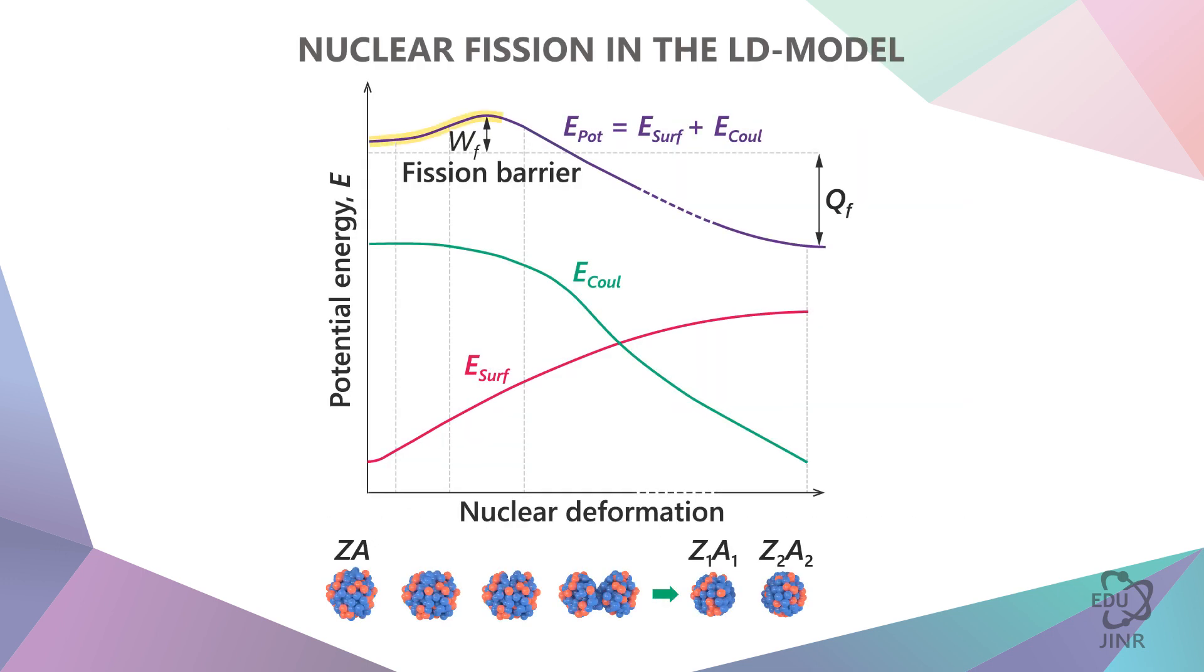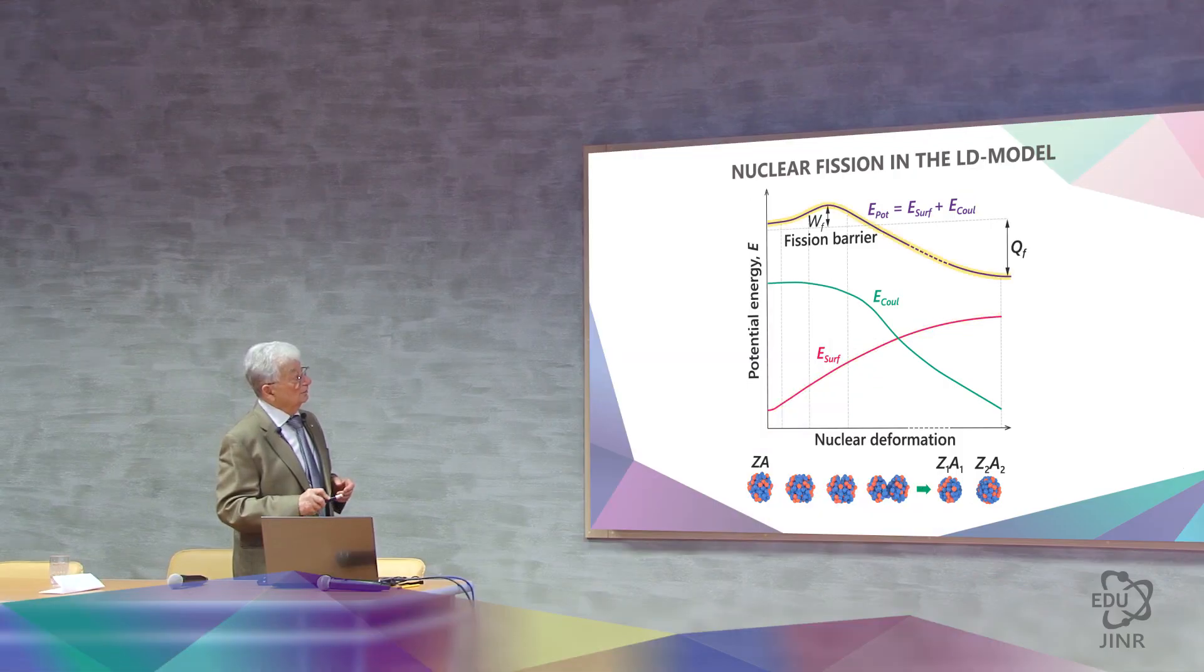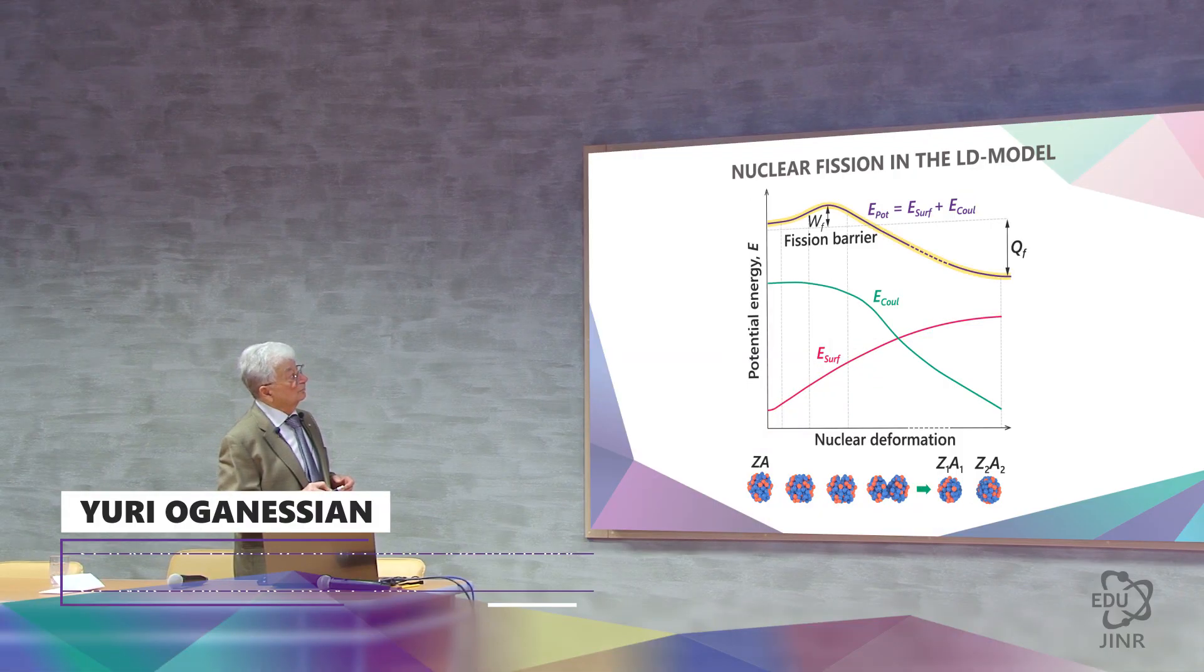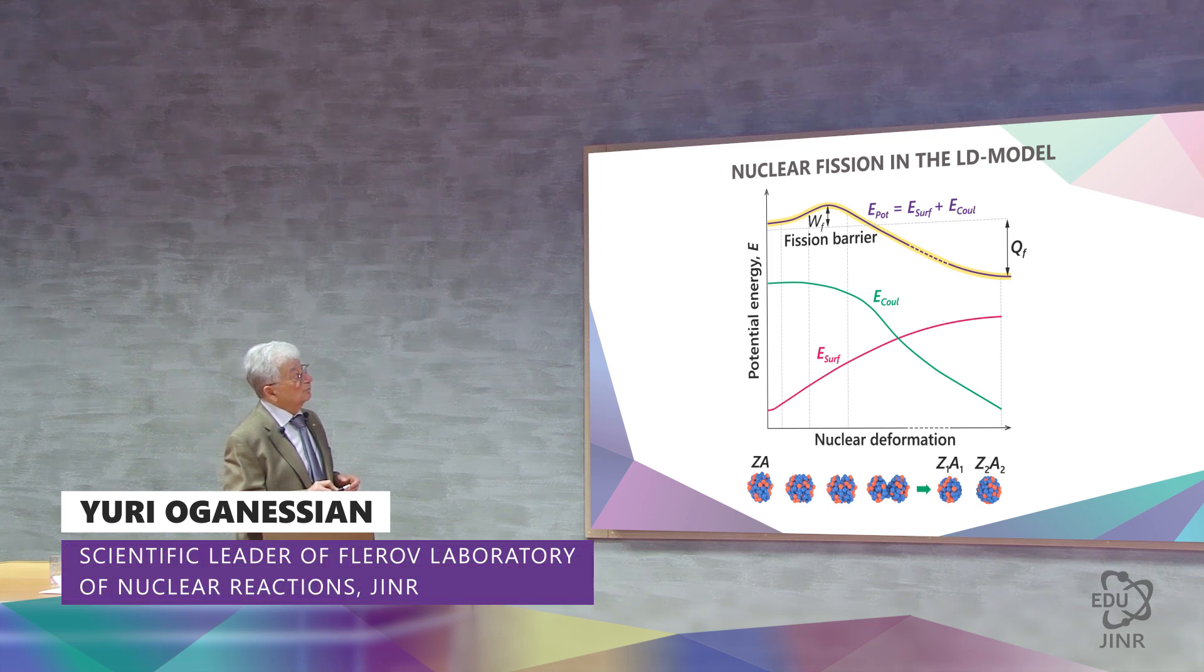They showed that if the nucleus is stretched, the drop is stretched, its potential energy increases up to a certain limit and then begins to decrease. Why? Because when a drop is stretched, its Coulomb energy decreases and the surface energy increases. The sum of these two energies created this graph with a rounded peak.